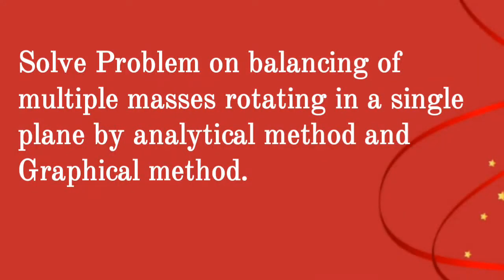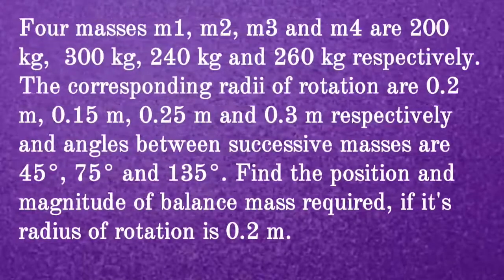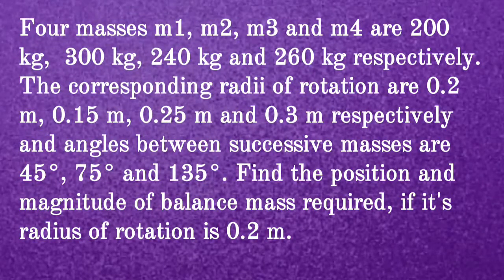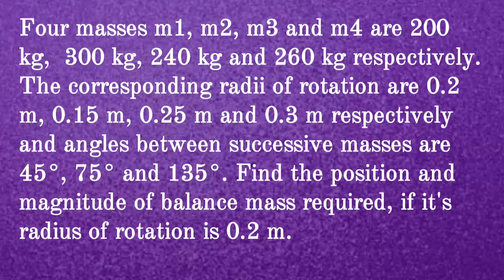Solve a problem on balancing of multiple masses rotating in a single plane by analytical method and graphical method. Four masses M1, M2, M3 and M4 are 200 kg, 300 kg, 240 kg and 260 kg respectively. The corresponding radii of rotation are 0.2 m, 0.15 m, 0.25 m and 0.3 m respectively. Angles between successive masses are 45°, 75° and 135°. Find the position and magnitude of the balance mass required if its radius of rotation is 0.2 m.